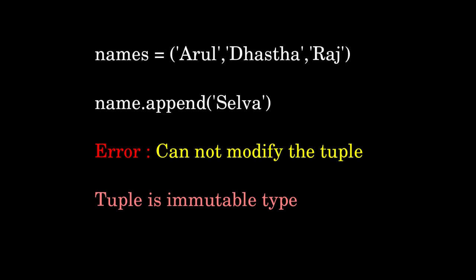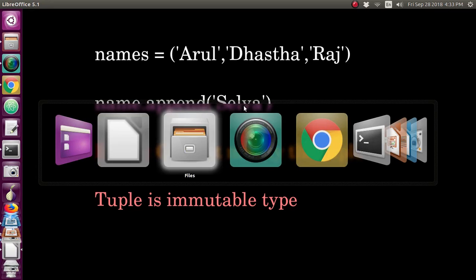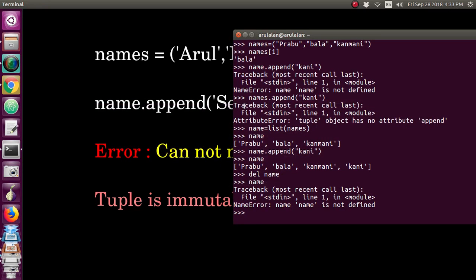Tuples can be created with parentheses, also called curved brackets. You cannot add items to a tuple — if you give the append command it will show an error because it is an immutable type. We will see this with some examples.